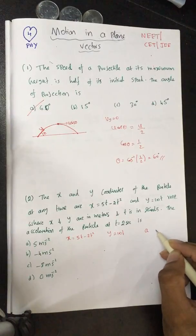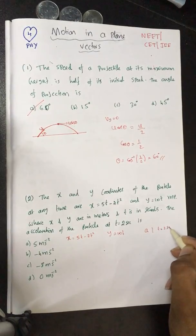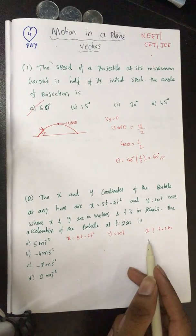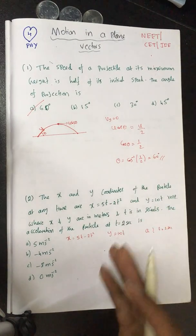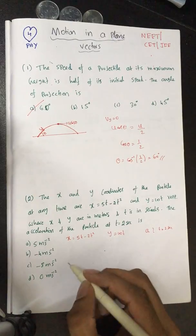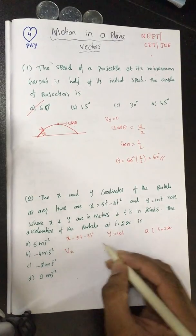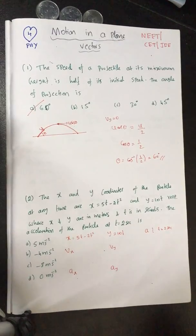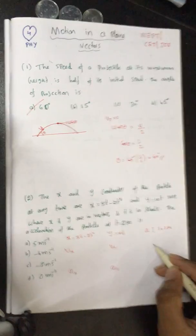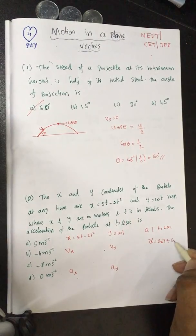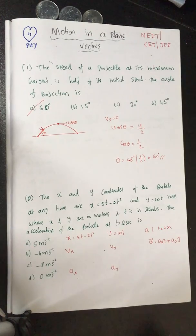Given x and y, we can find the acceleration. This is a case of two-dimensional motion, so we have both x and y coordinates. We can find vx and vy, as well as ax and ay. We then express the acceleration vector as ax i-cap plus ay j-cap and find the magnitude of acceleration.